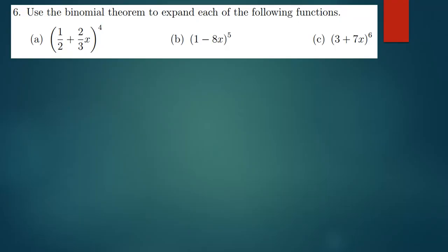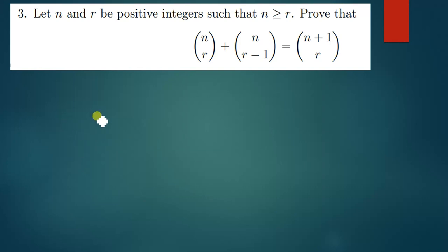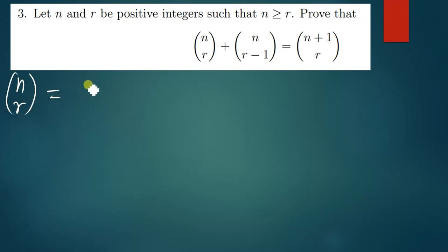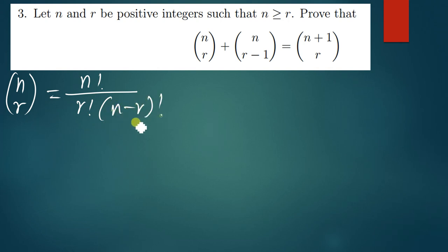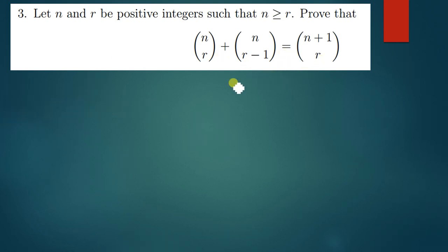So let's quickly look at the question. We're going to use the formula: n choose r is equal to n factorial over r factorial times n minus r factorial. This is the formula we're going to apply to prove this question on the screen.